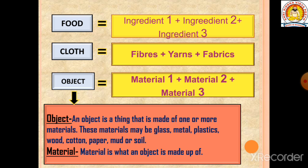In the 1st chapter we studied that food is made up of varieties of ingredients. In the 3rd chapter we studied that clothes are made up of fabrics, which are made up of yarns, and yarns are made up of fibers. Similarly, in this chapter, objects are also made up of varieties of materials.